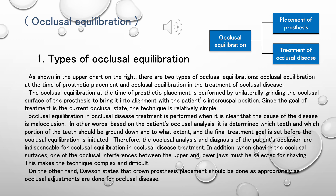Since the goal of treatment is the current occlusal state, the technique is relatively simple. Occlusal equilibration in occlusal disease treatment is performed when it is clear that the cause of the disease is malocclusion. Based on the patient's occlusal analysis, it is determined which teeth and which portion of the teeth should be ground down and to what extent. The final treatment goal is set before the occlusal equilibration is initiated. Therefore, occlusal analysis and diagnosis of the patient's occlusion are indispensable for occlusal equilibration in occlusal disease treatment.